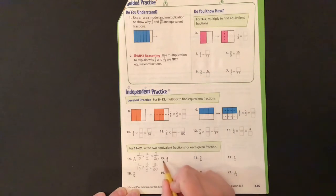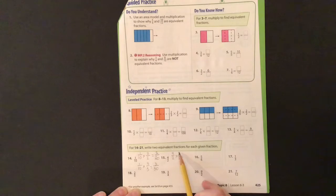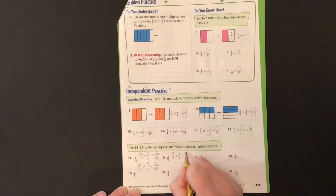Moving on to number 15, 4 halves. So we'll go ahead and start. 4 halves times 2 halves equals, 4 times 2 is 8, and then 2 times 2 is 4. So we have 8 4ths.